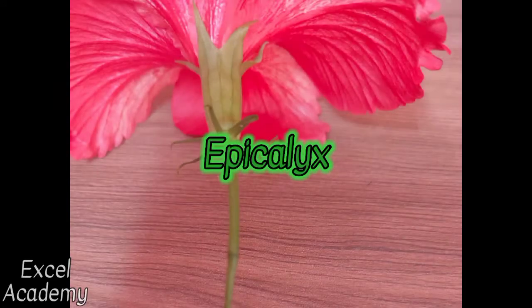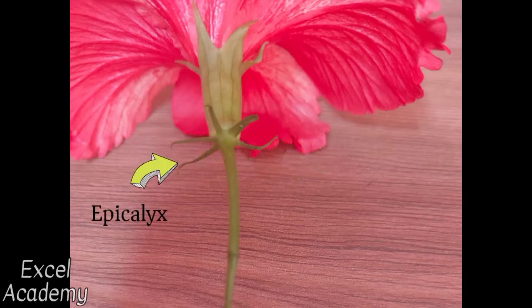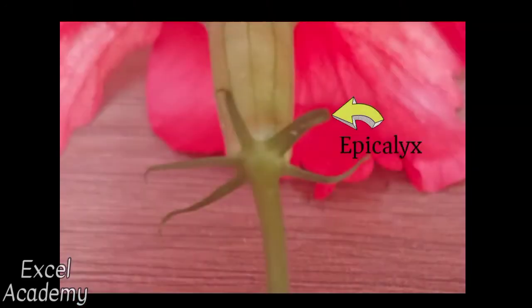Epicalyx. It is a calyx or sepal-like extra whorl of floral appendages which protects the flower in the bud stage. It may or may not be present in all types of flowers. It is green in color and helps in photosynthesis.